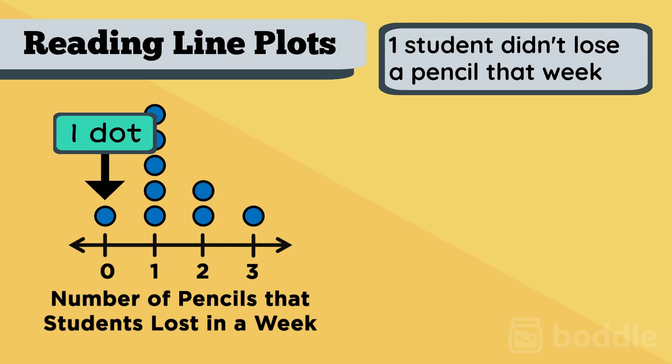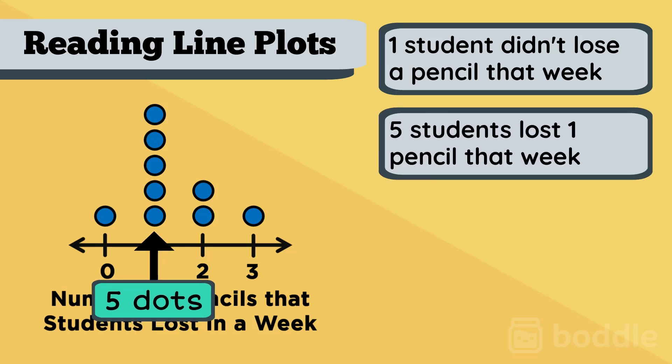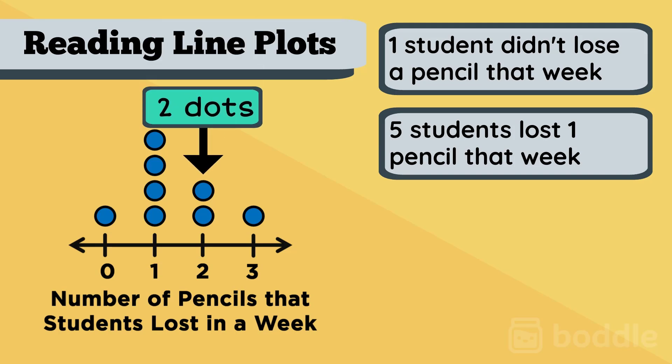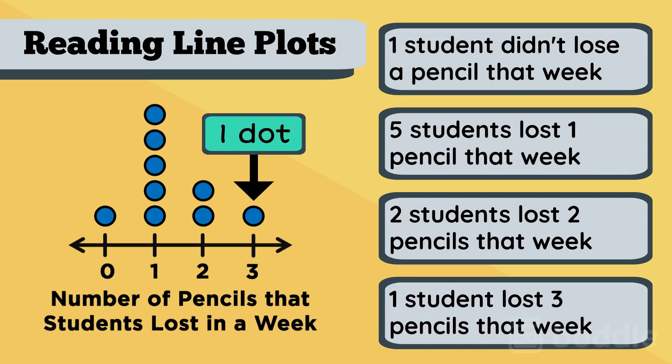Wow! Next we see five dots above one, meaning five students lost one pencil. There are two dots above two, which means two students lost two pencils. And finally there's one dot above three, meaning that one student lost three pencils that week.